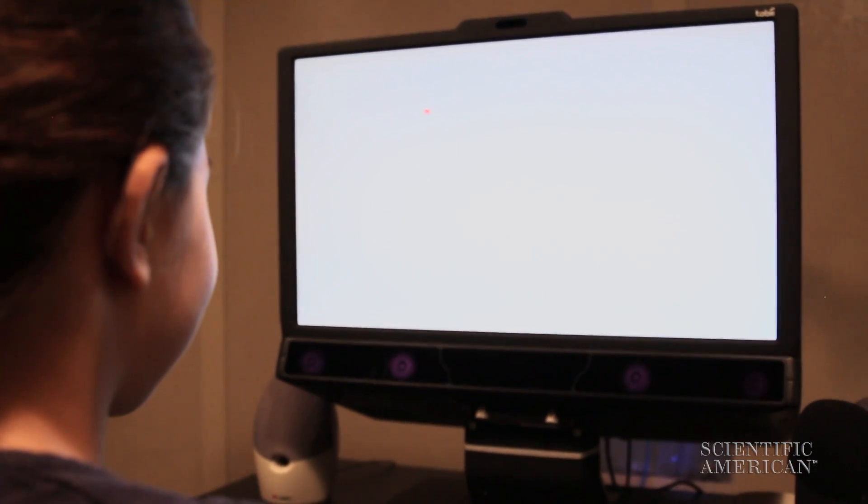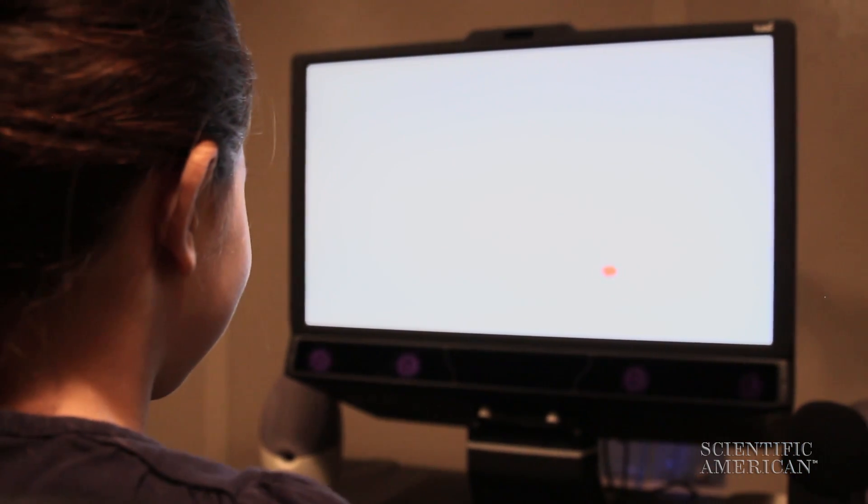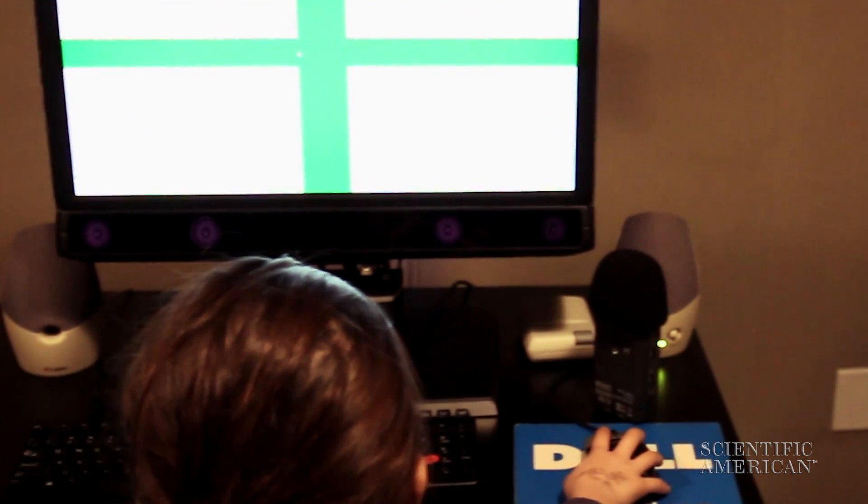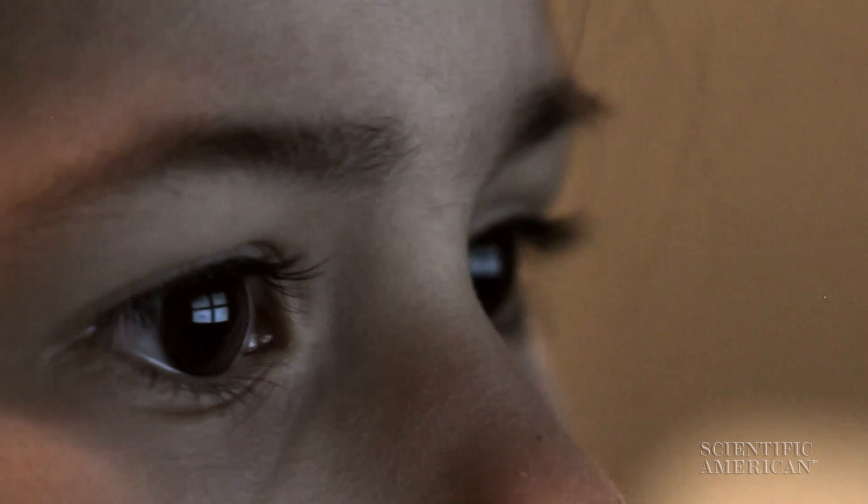Schwartz uses eye-tracking technology to glimpse inside a child's mind. A small strip underneath the monitor shines infrared light onto Maria's cornea and records the reflection of that light to track where on the screen she's looking.